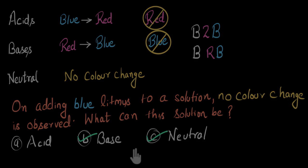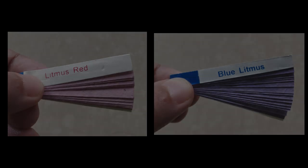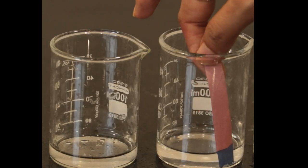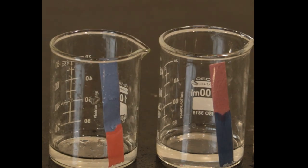One last thing about litmus: some of you may have litmus paper in your lab instead of litmus solution. Litmus paper is simply paper dipped in litmus solution — dip paper in red litmus solution to get red litmus paper, and in blue litmus solution for blue litmus paper. Litmus paper is very handy and easy to carry, which is why we often use it instead of litmus solution. The chemical reactions and color changes are exactly the same: red litmus paper in a base turns blue, and blue litmus paper in an acid turns red.